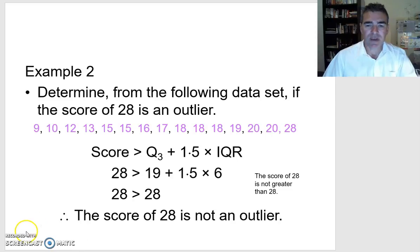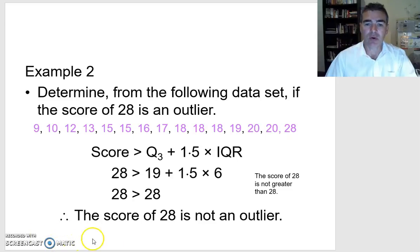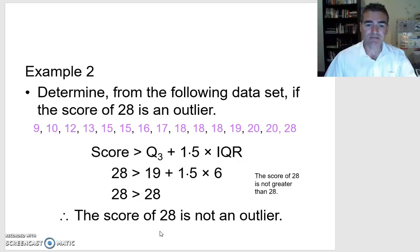So we've just found two examples of how we determine whether a low score or a high score is actually an outlier from a data set. Even though they may appear to be outliers, there are two rules we need to use to check that data.